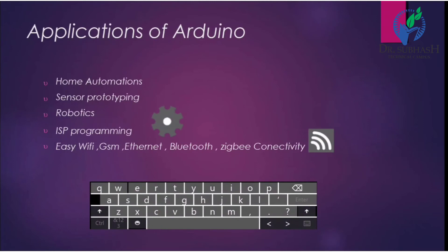Applications of Arduino include home automation — for automatically turning on the fan and home appliances like fan, tube light, LEDs, TV, and AC. It is also used for sensor prototyping and robotics, ISP programming, and easy Wi-Fi, GSM, Ethernet, Bluetooth, and ZigBee connectivity. These are the features and applications of Arduino.